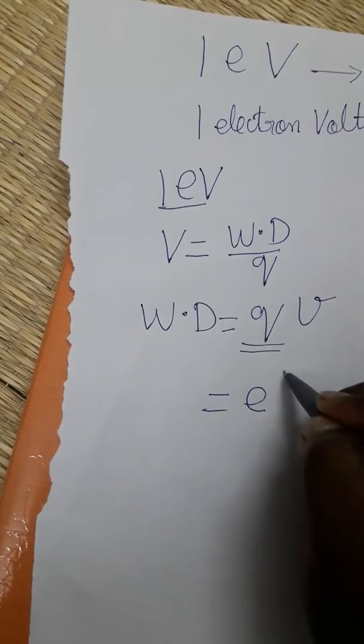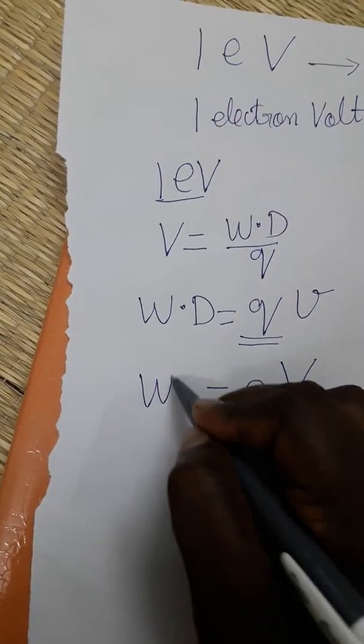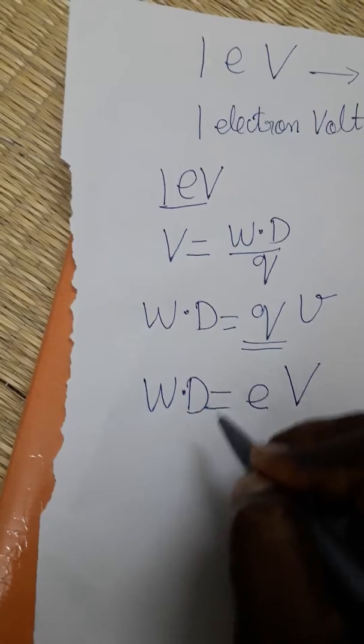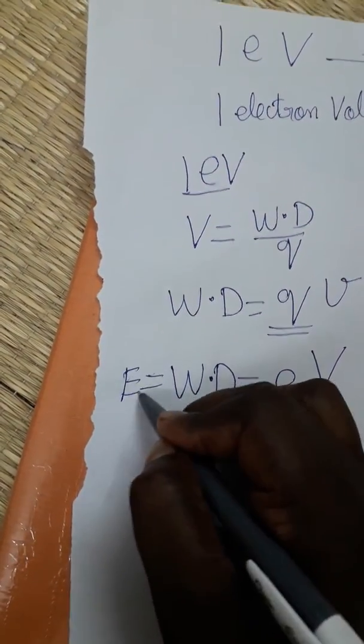So electron volt is called work done. Work done is also called energy.